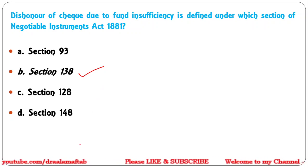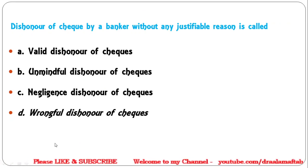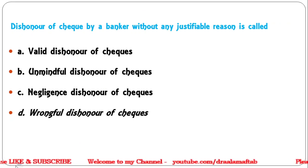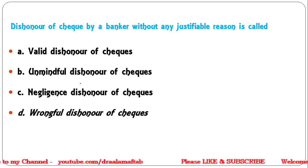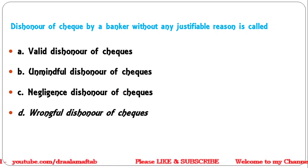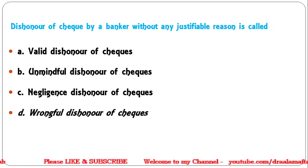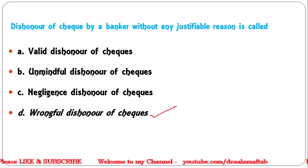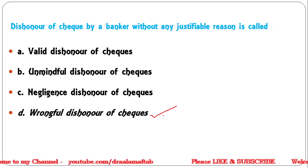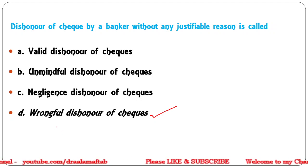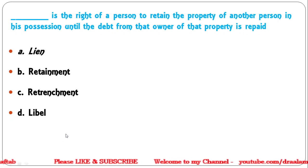Next question: Dishonor of a cheque by a banker without any justifiable reason is called what? Options: Valid dishonor, Unmindful dishonor, Negligence dishonor, or Wrongful dishonor. The correct answer is Wrongful dishonor — dishonor of a cheque by a banker without justifiable reason is called wrongful dishonor.